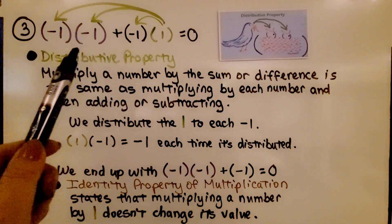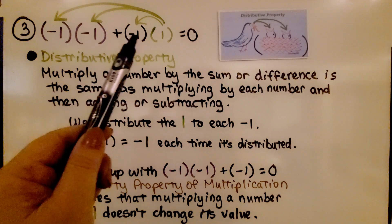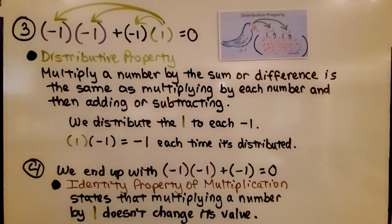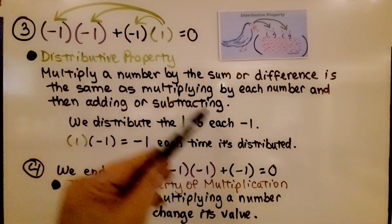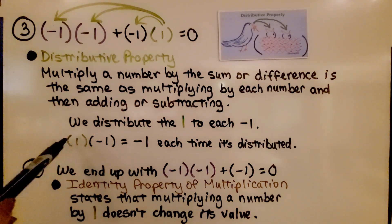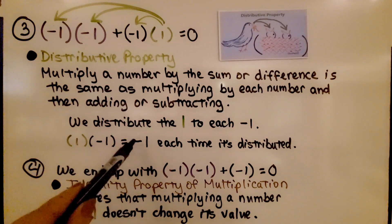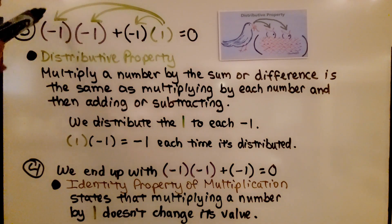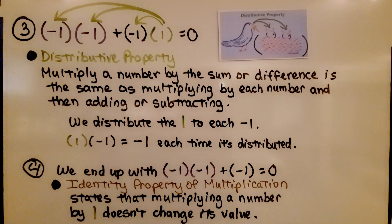We can multiply negative 1 by the quantity negative 1 plus 1 and distribute this positive 1 to each number. The distributive property says multiplying a number by a sum or difference is the same as multiplying by each number and then adding or subtracting. We distribute that 1 to each negative 1, and when we multiply that green 1 to each negative 1, it equals negative 1 each time. So we end up with negative 1 times negative 1 plus negative 1 times 1 is equal to 0. That's the identity property of multiplication — it states that multiplying a number by that green 1 doesn't change its value.